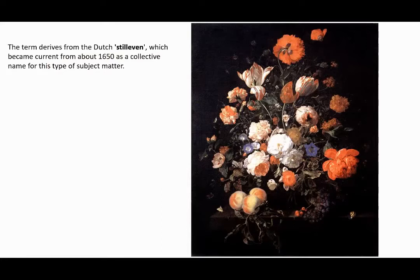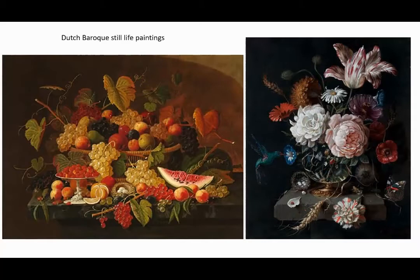Still life subjects — usually food, flowers, household objects — won't move like a living person or animal, and the lighting won't change like it would if you were outside painting a landscape. This gave artists the ability to take their time and produce some of the most detailed and realistic paintings ever.